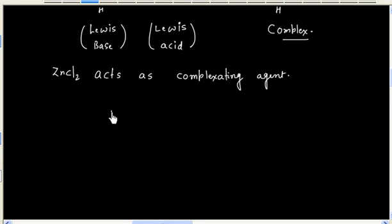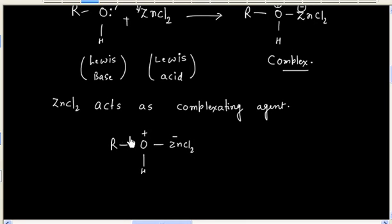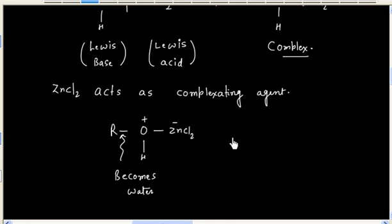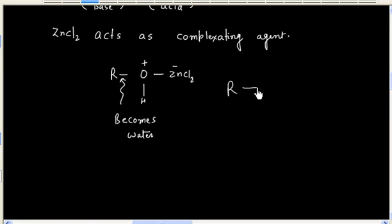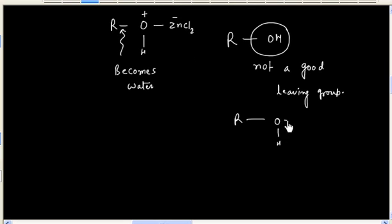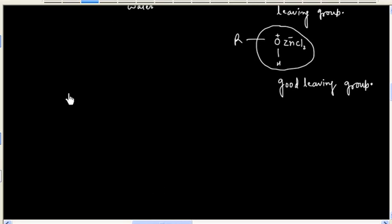After complex formation, carbon-oxygen bond becomes weak. Basically this complexation makes OH a good leaving group. If you see alcohol, OH is not a good leaving group, but after complexation this is very similar to reaction of alcohol with acid.